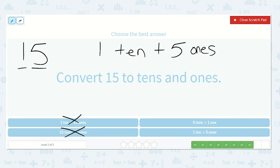Here we have five tens plus one one. Oh, they got that backwards. It's one ten and five ones. So this one's not the right one. Here it is. One ten plus five ones.